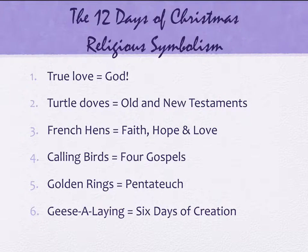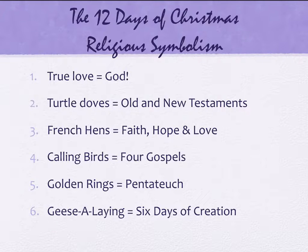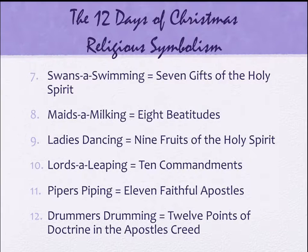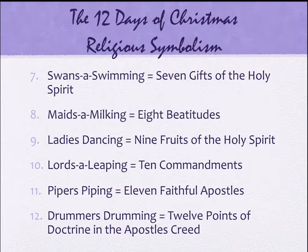The first day is a partridge in a pear tree, symbolizing true love or God. The second day: two turtle doves, representing the Old and New Testament. Third day: three French hens — faith, hope, and love. Fourth day: four calling birds — the four Gospels. Fifth day: five golden rings — the Pentateuch, the first five books of the Old Testament. Sixth day: six geese a-laying — six days of creation. Seventh day: seven swans a-swimming — seven gifts of the Holy Spirit. Eighth day: eight maids a-milking — the eight beatitudes. Ninth day: nine ladies dancing — nine fruits of the Holy Spirit. Tenth day: ten lords a-leaping — the Ten Commandments. Eleventh day: eleven pipers piping — the eleven faithful apostles. Twelfth day: twelve drummers drumming — the twelve points of the Apostles' Creed.